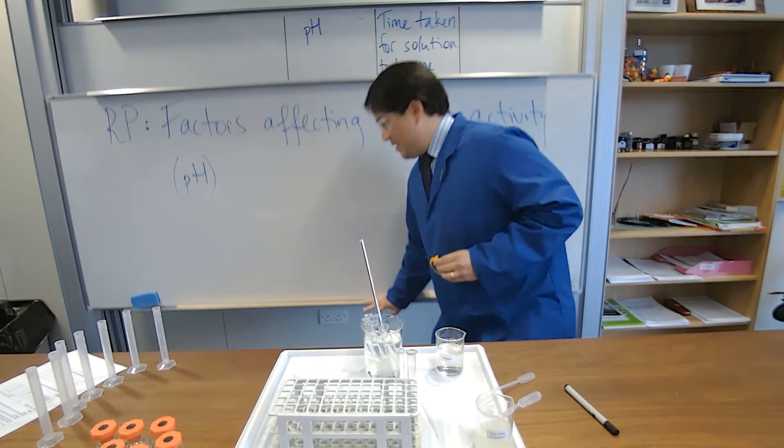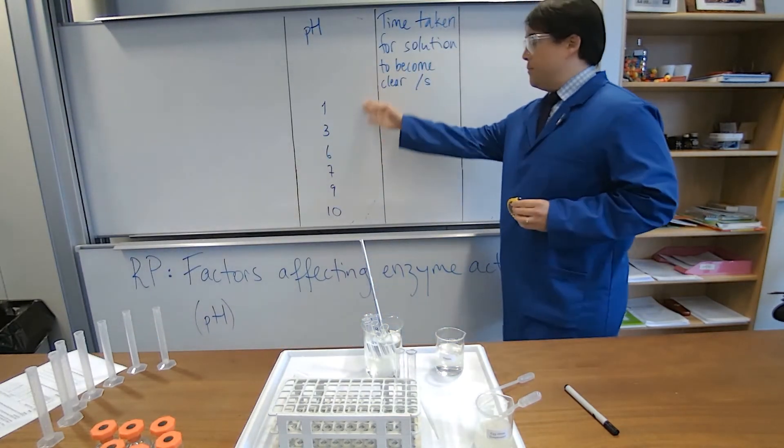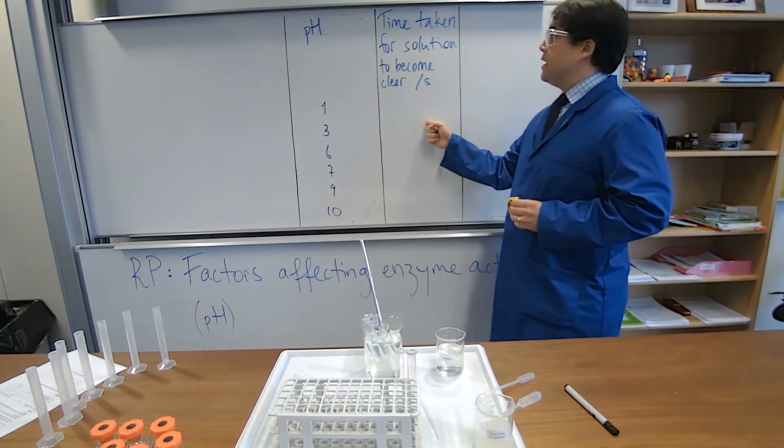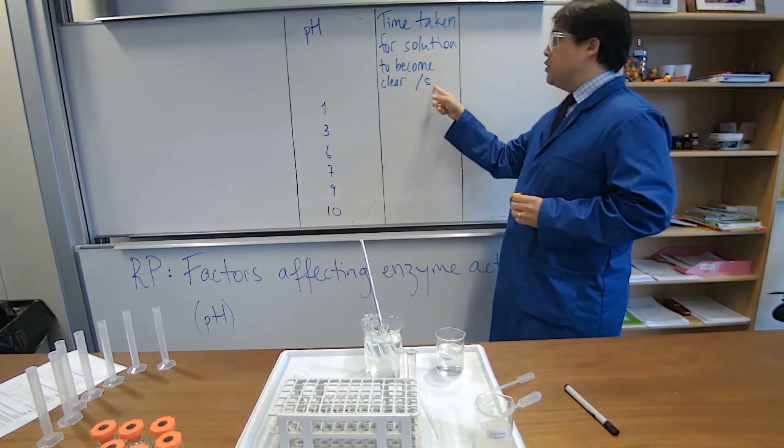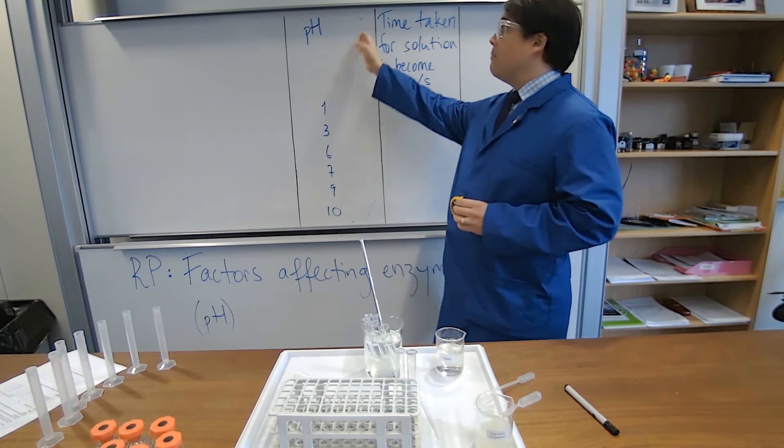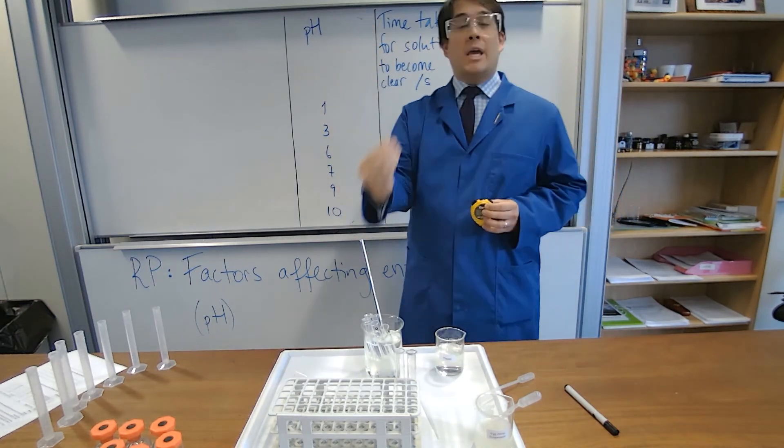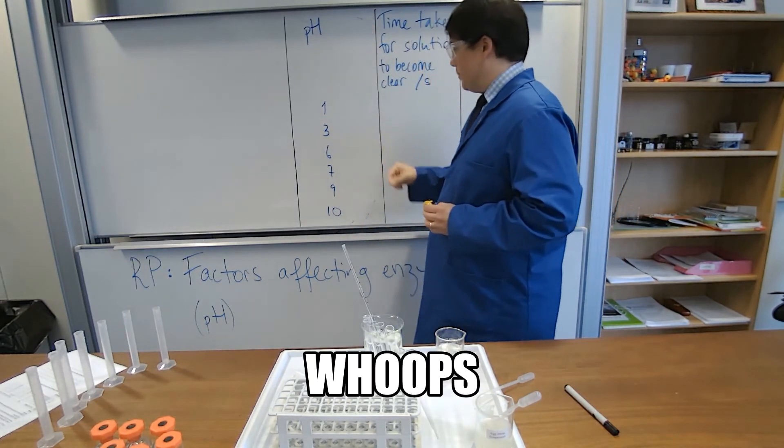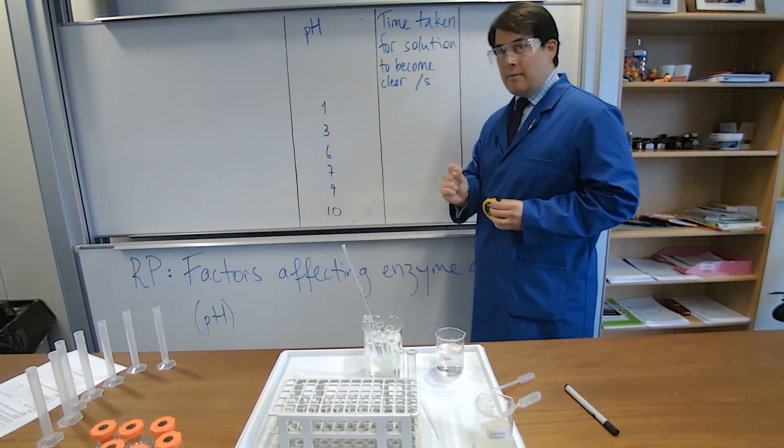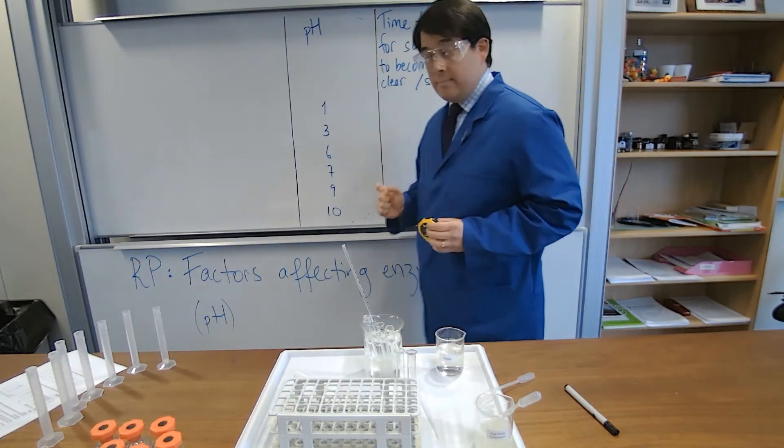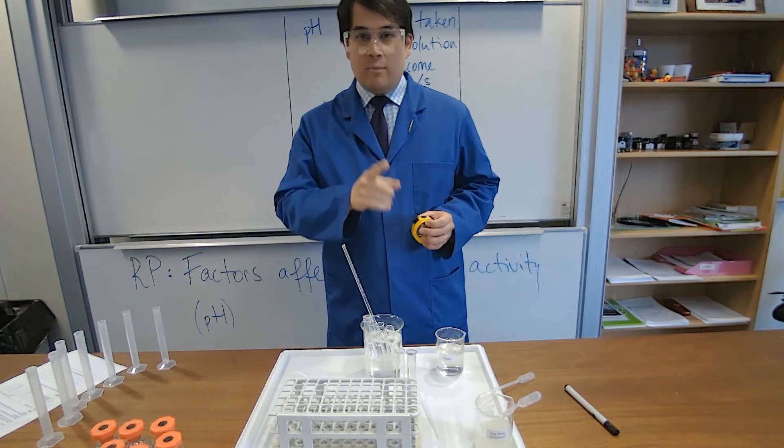Now, different pHs, time taken for the solution to become clear, my units are there. Again, my independent variable, so what I'm changing, is in the first column. And what I'm measuring, my dependent variable, is in the second column. So, give it a bit of time, we'll be back in a sec.